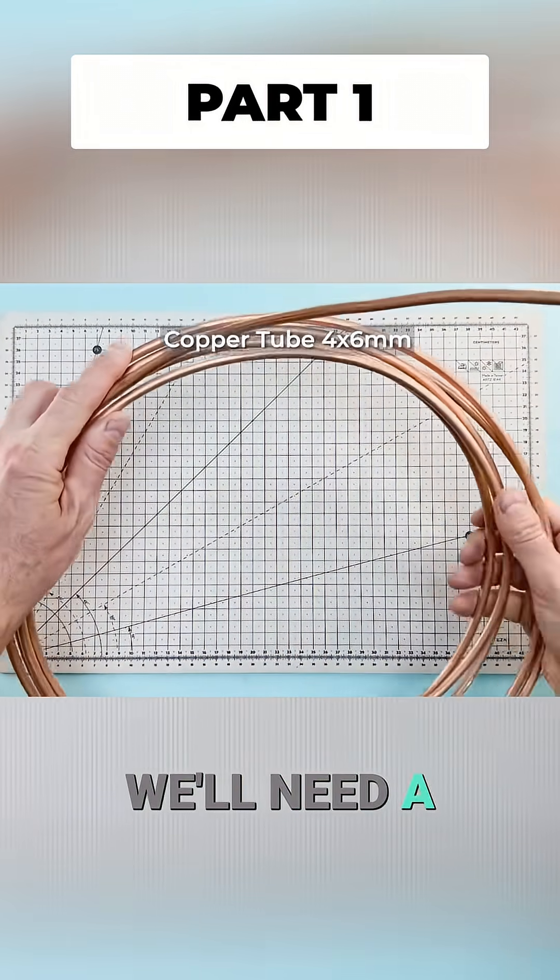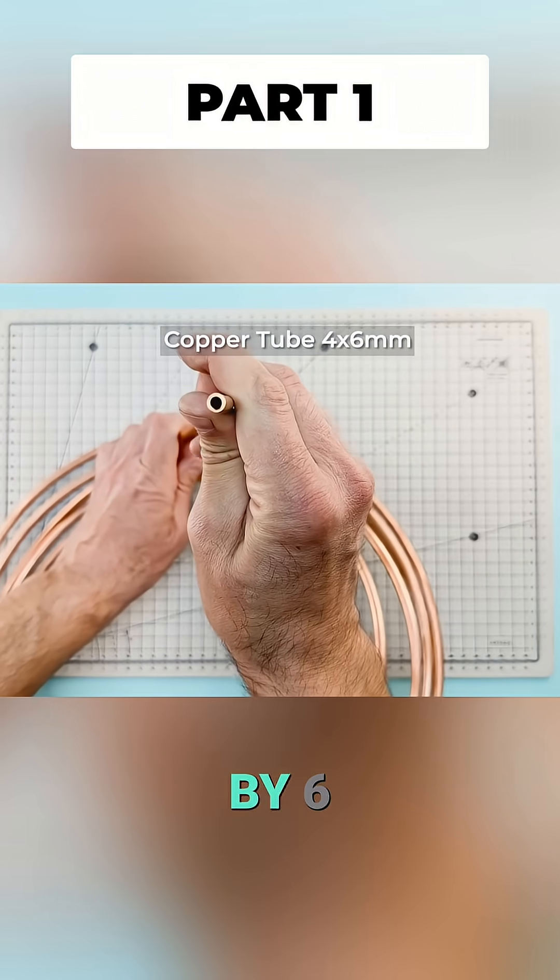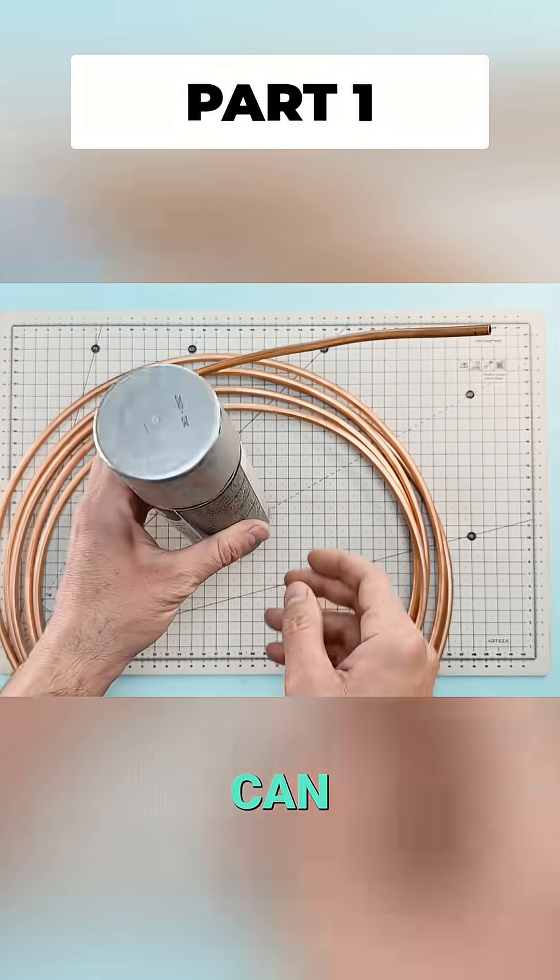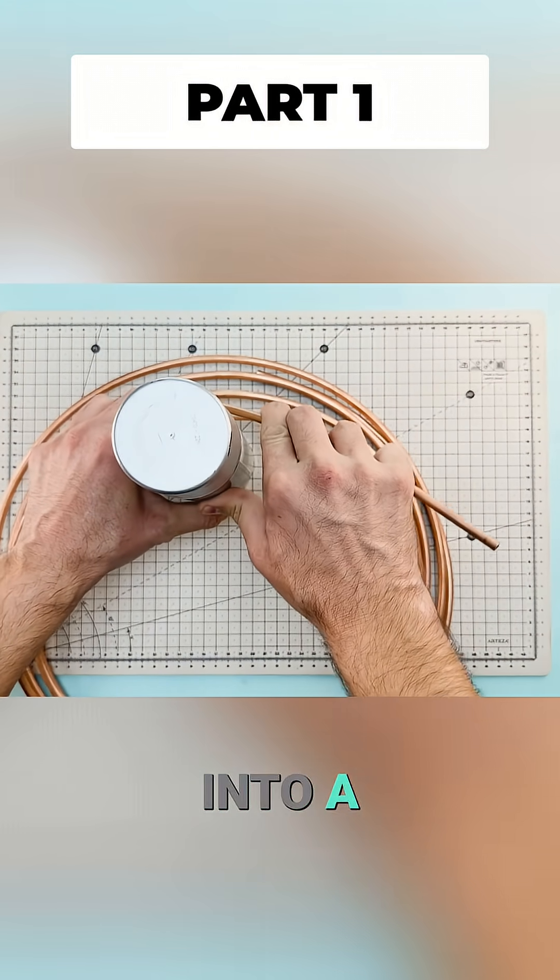To begin we'll need a copper tube with a four by six millimeter diameter. Using something round like this paint can, we'll bend the copper into a spiral.